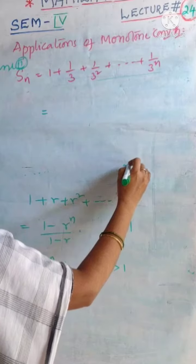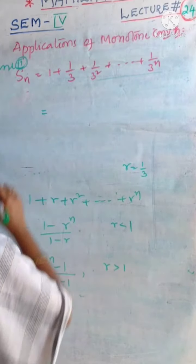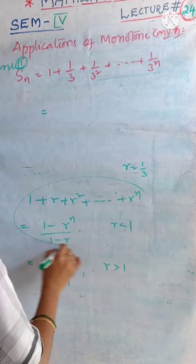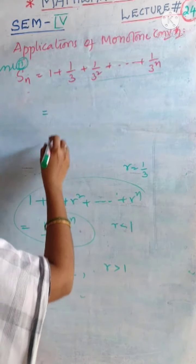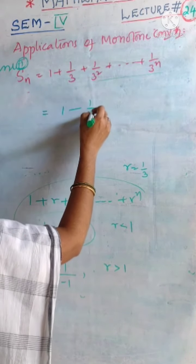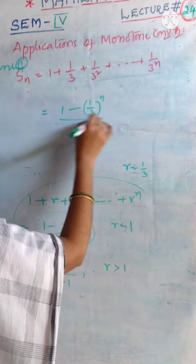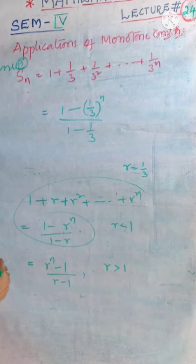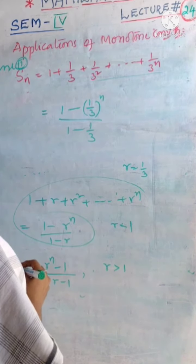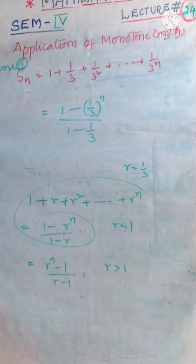Here you observe that r value is 1 by 3. Then we can apply this condition. What is the r value? 1 by 3. Then we can write it as 1 by 3 whole power n by 1 minus 1 by 3. This is the value of our sequence.